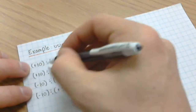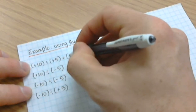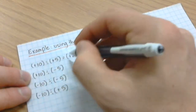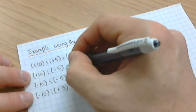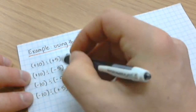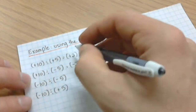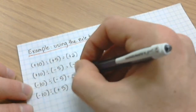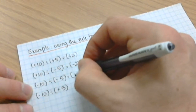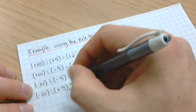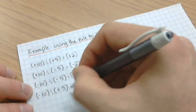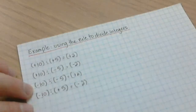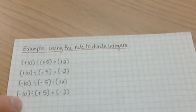Positive ten divided by positive five — positive two. Positive ten divided by negative five — negative two, because there's only one negative sign. Negative ten divided by negative five — positive two, because I have an even number of negatives. Negative ten divided by positive five — negative two, because there's only one negative sign.